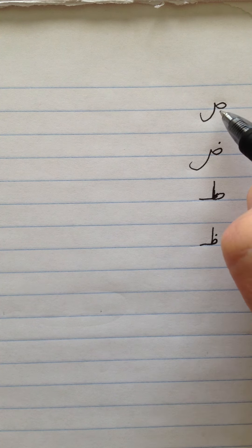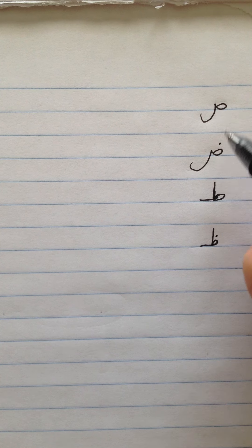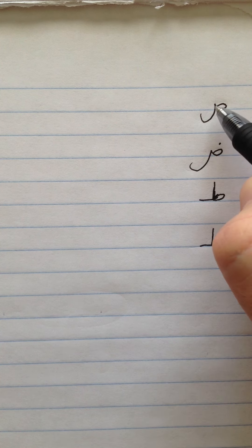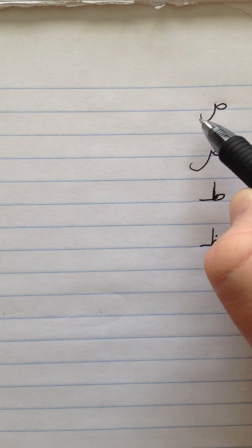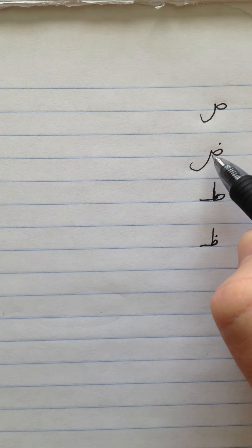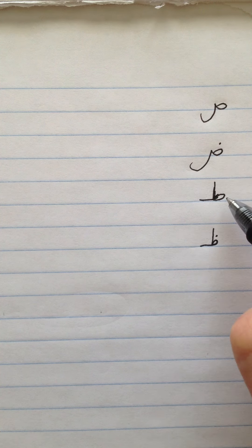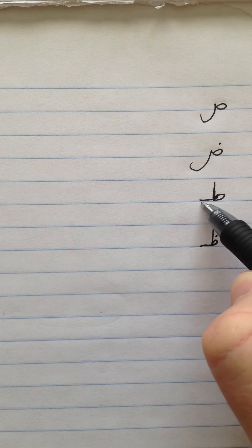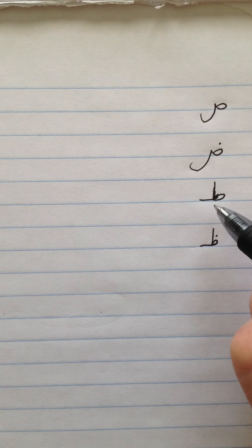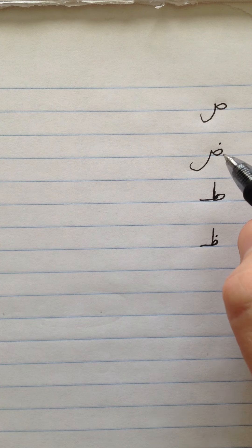Now to write these letters: Swad and Zwad are a loop, a peak, and a tail. Zwad is the same thing - loop, peak, tail - with a dot on top. Toi and Zoi are like a bee with a line coming out the back. All four of these letters are connectable when the adjoining letters also connect.